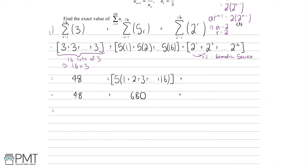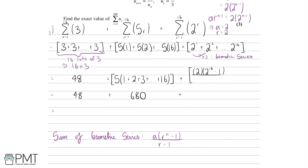Now we can use our formula for the sum of a geometric series, available in your formula booklet: S equals a times (r to the power of n minus 1), all over (r minus 1). Plugging in: a is 2, r is 2, and n is 16 terms, so we have 2 times (2 to the 16 minus 1), all over (2 minus 1). Putting this into a calculator, we get 131,070.